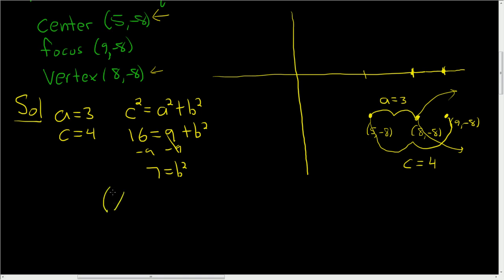This is (x - h) squared. It opens left and right, so the x comes first: (x - h)²/a² - (y - k)²/b² = 1.